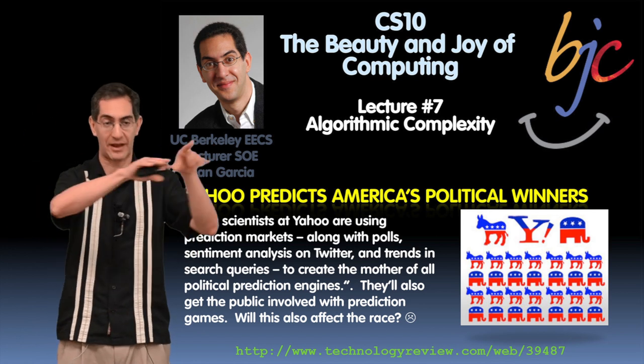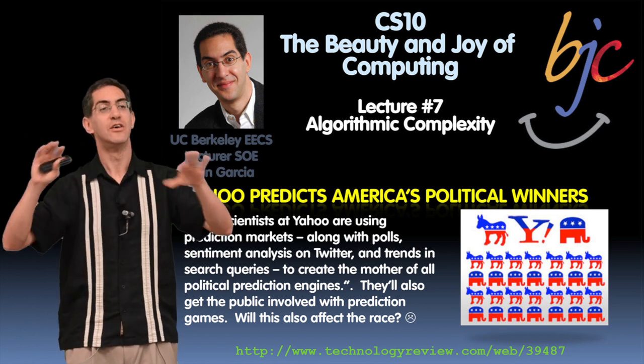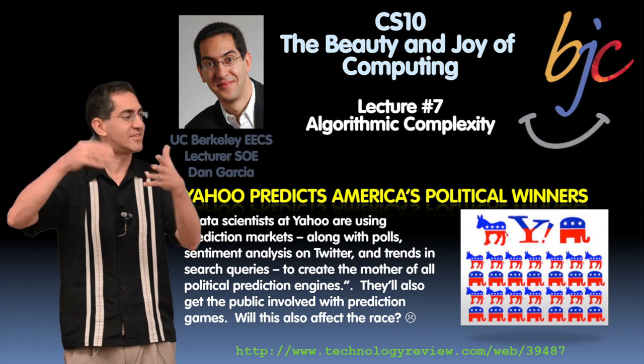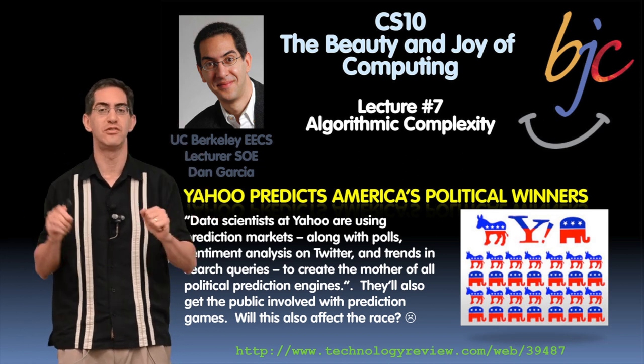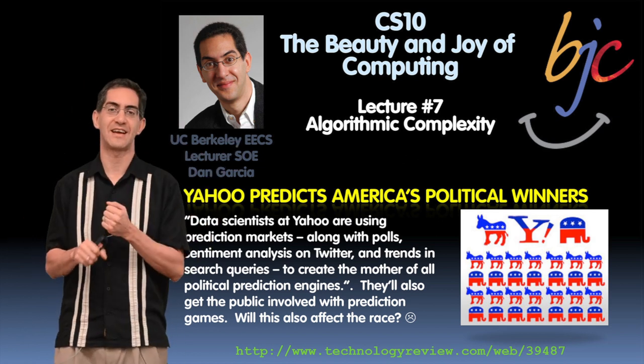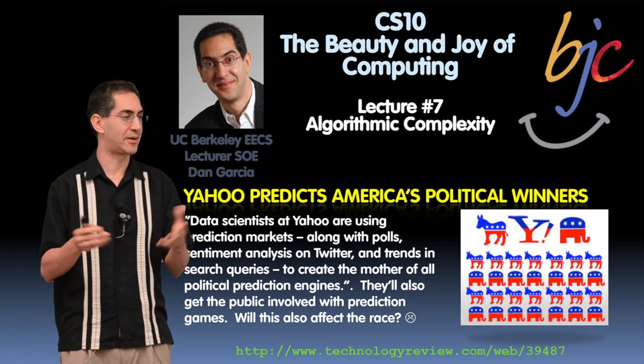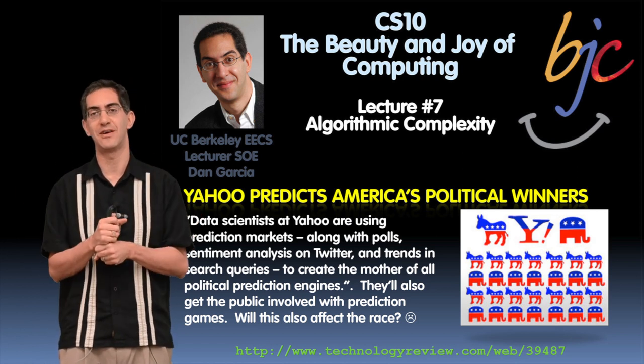When Michael Jackson passed away, there were like a million spikes about his name. So based on these kind of social cues, they think they can predict who the next winner of the Republican nominee is going to be in the president. So it's very interesting.